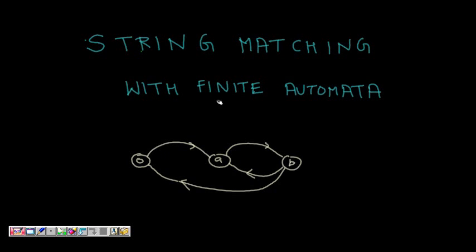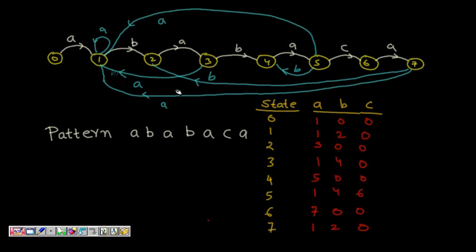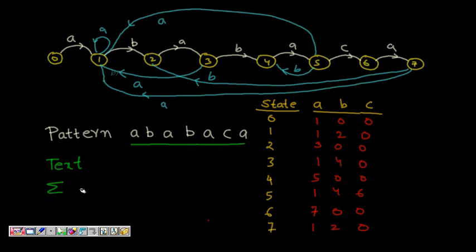Pattern matching and text matching is very important across the internet — when you search Google, for example. This is one of the most efficient methods. Given a pattern and a text, we need to find that pattern in the text. Based on the pattern, we first identify the alphabet — the set of possible symbols — and then we construct a state machine.